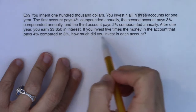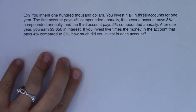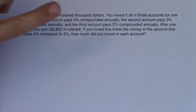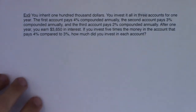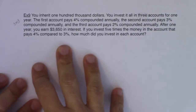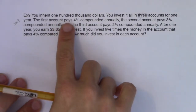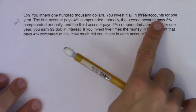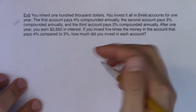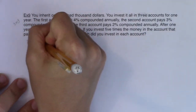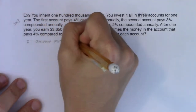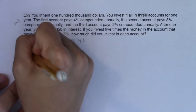So first of all, I have three accounts and they're asking me how much I invested in each of them — one paying 4%, one paying 3%, one paying 2%. I have three accounts, so I'm going to have a three-by-three system. Let me define my variables: x, y, and z. I'll let x be the amount invested in the account paying 4%, y be the amount invested at 3%, and z be the amount invested at 2%.